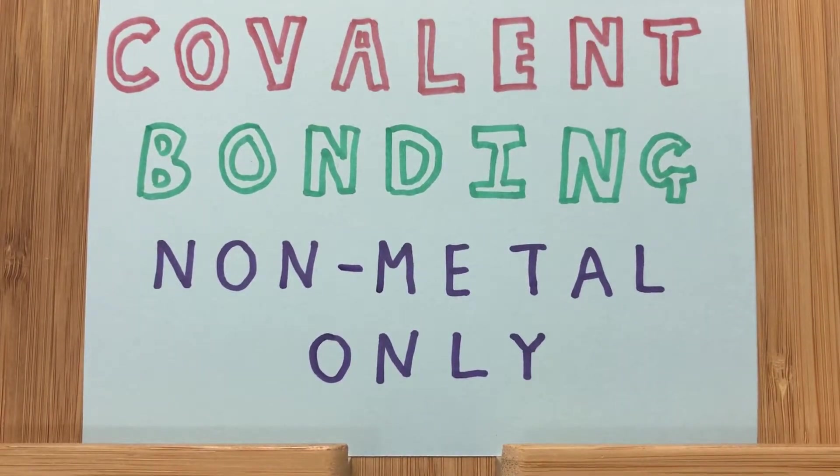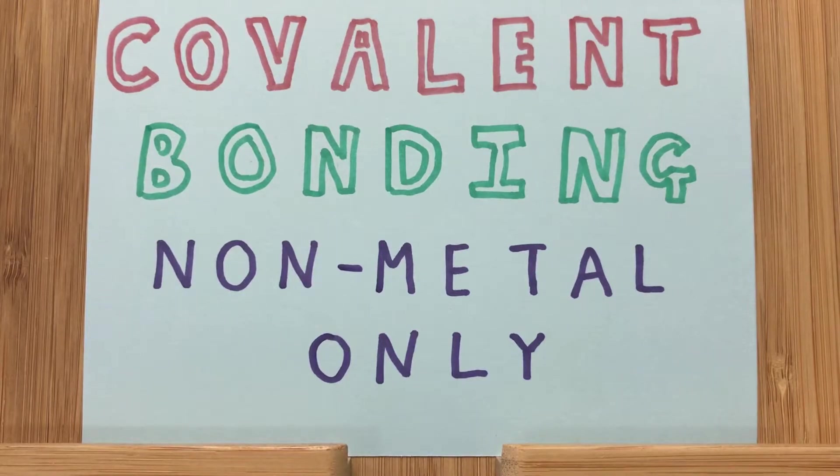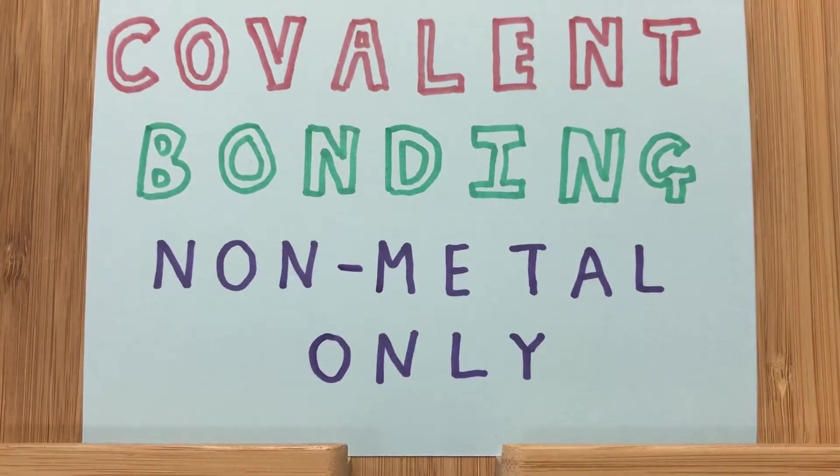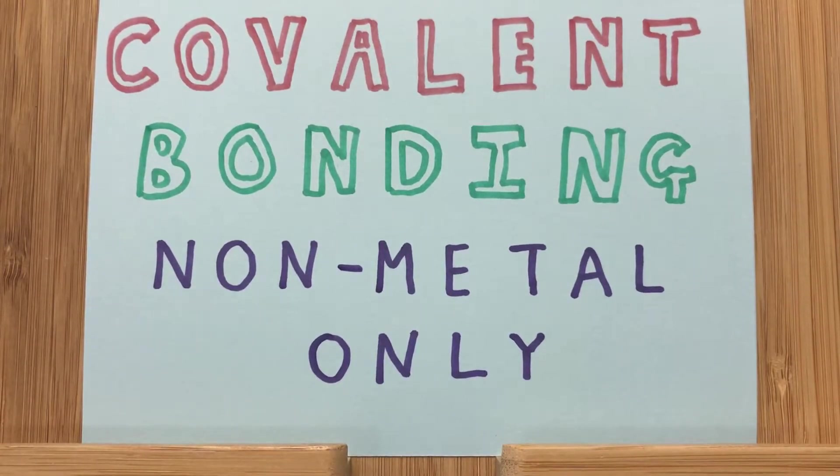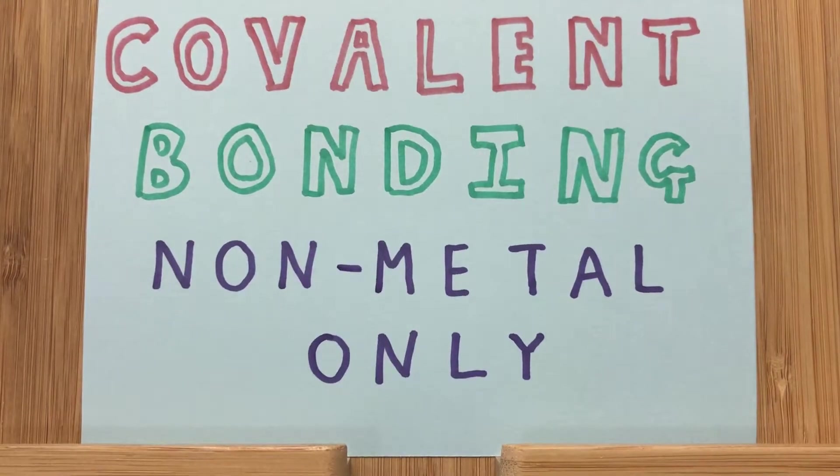This is just our simple, small molecules. We call it simple covalent bonding. We really mean that there's only a few atoms involved. And this involves non-metals only. So there are several examples that you have to know, and those are the ones that I'm going to go through.